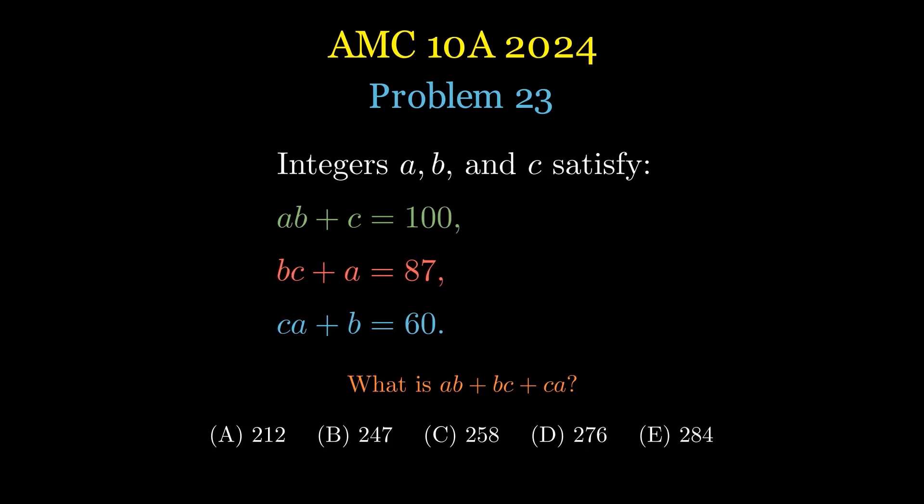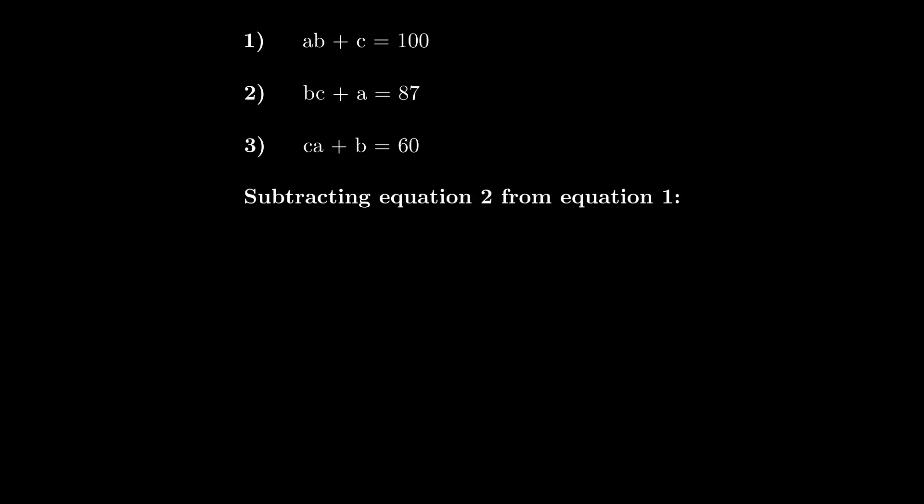All right, so we have three equations, but what can we do with them? Let's subtract the second equation from the first. That gives us AB minus BC plus C minus A equals 13. We factor it into A minus C times B minus 1 equals 13. This equation is really important. It tells us how these numbers are connected.